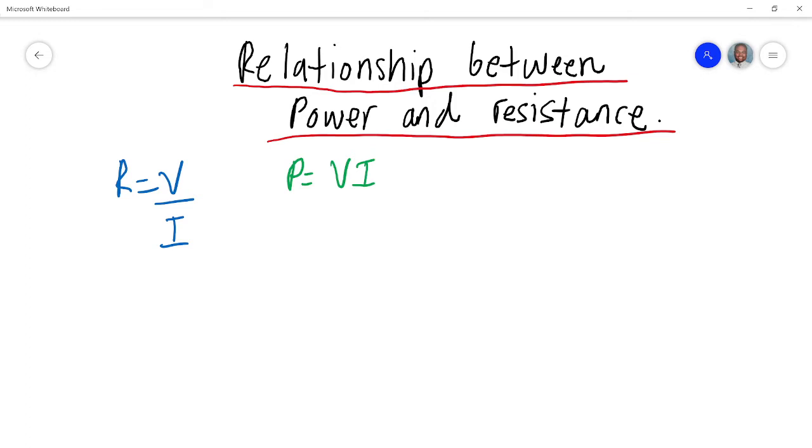So with that in mind, how do we try to find the connection where we could involve power and resistance together? Now, if you look at this formula more specifically, we know very well, if we make V the subject of the formula, V becomes I times R. And if I make I the subject of the formula, that becomes V over R.